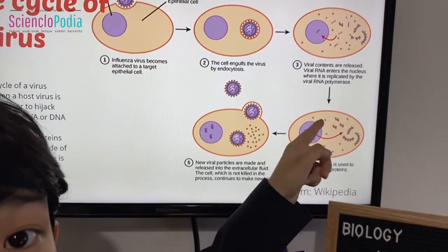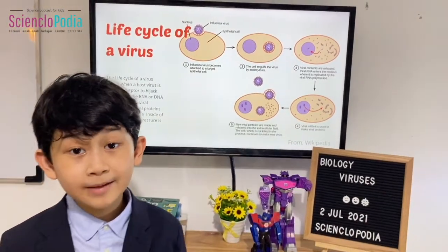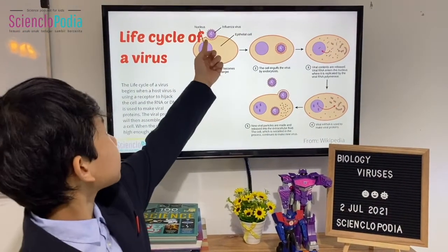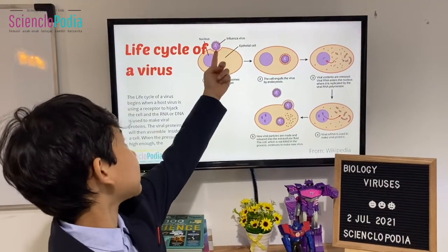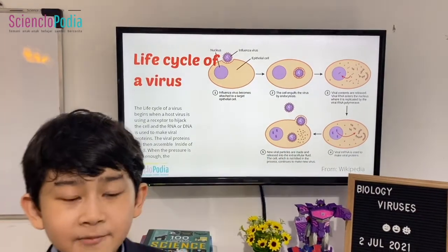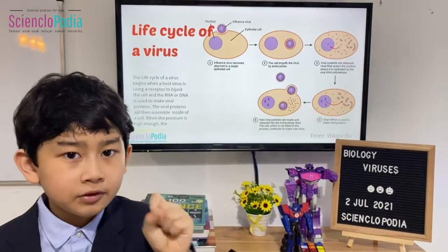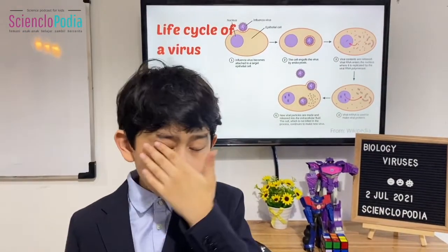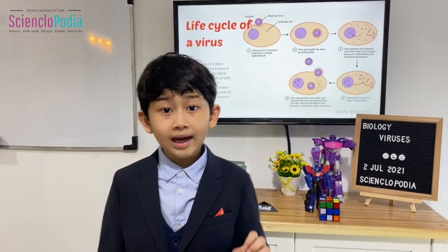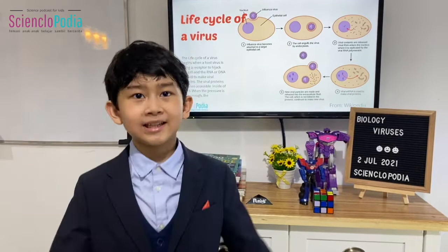After that, the viral mRNA — mRNA is like RNA — is used in the nucleus to make viral proteins. Viral proteins are really bad because they can construct new viruses. The proteins clump together to form a new virus, and then it repeats over and over using the cell's resources, until there's too much pressure and the cell explodes, releasing lots of viruses.